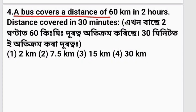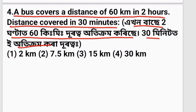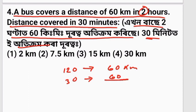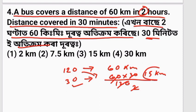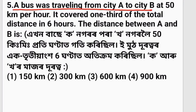This is the option of 60 km in 2 hours. Distance is covered in 30 minutes. This is 2.5 km in 30 minutes. This is 2.5 km in 20 minutes. This is 3.5 km in 30 minutes. This is 3.5 km in 60 minutes.